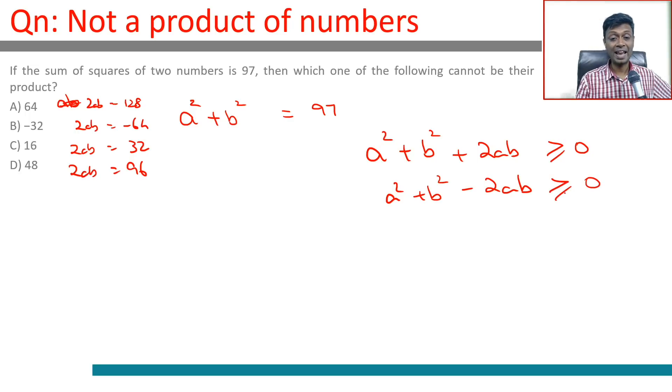97 plus 128 works, 97 minus 128 does not work. It cannot be 64, the rest it can be.